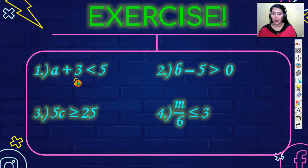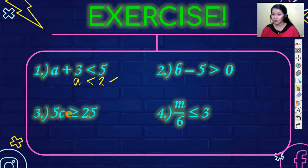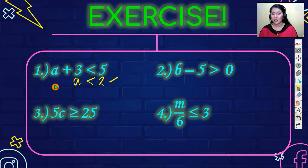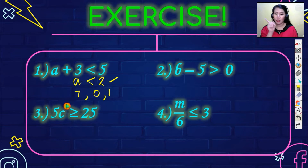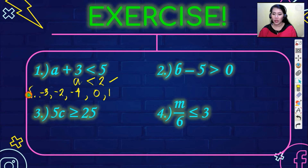For number one, the answer is: a is less than two. So the solution set contains numbers less than two — one, zero, negative one, negative two, negative three, and so on, going to the left. Close your set in a brace.